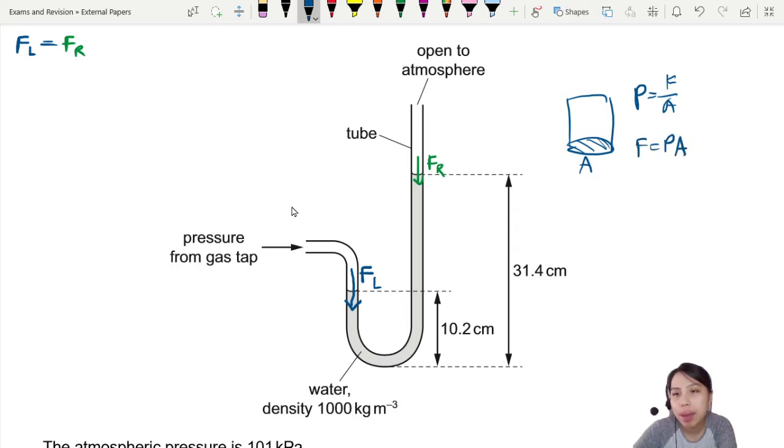Force you can rewrite as pressure times area. So on the left side you have some pressure times the area, on the right side also a pressure, some different value, but the same area.